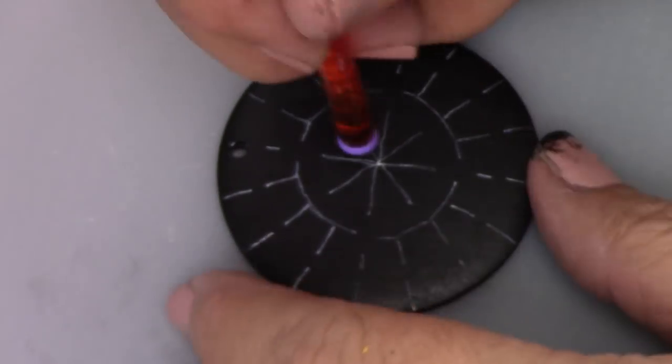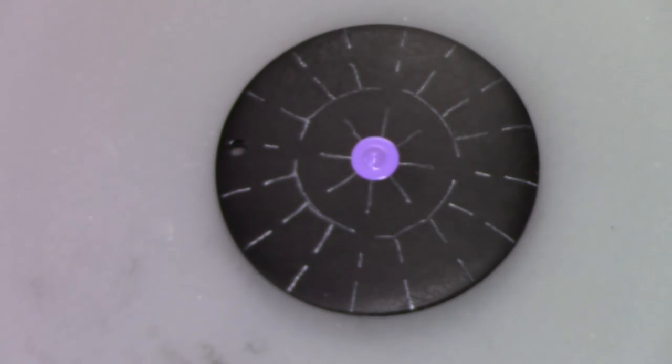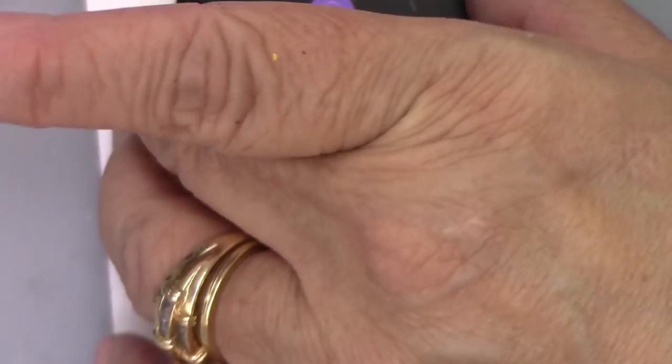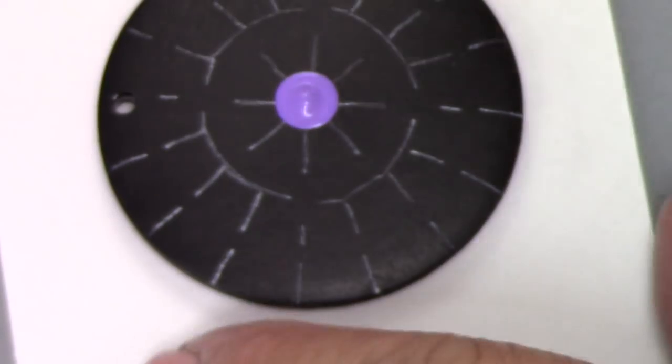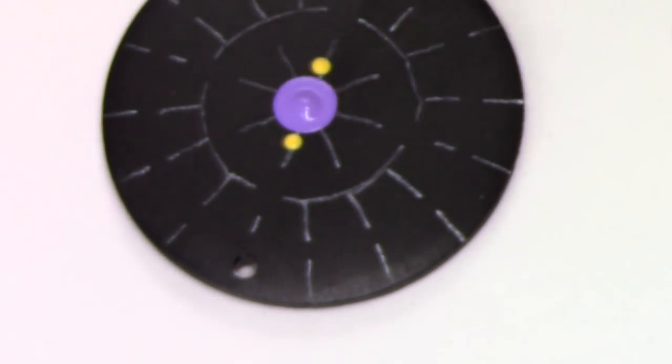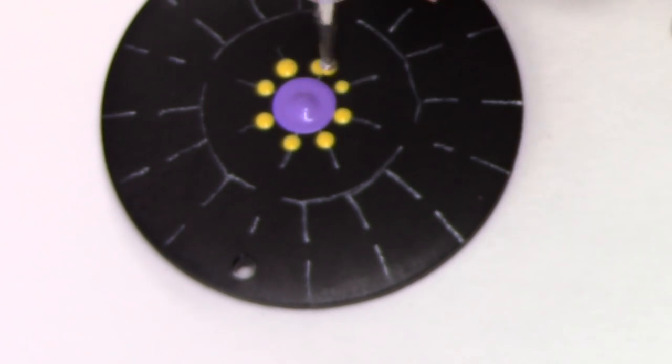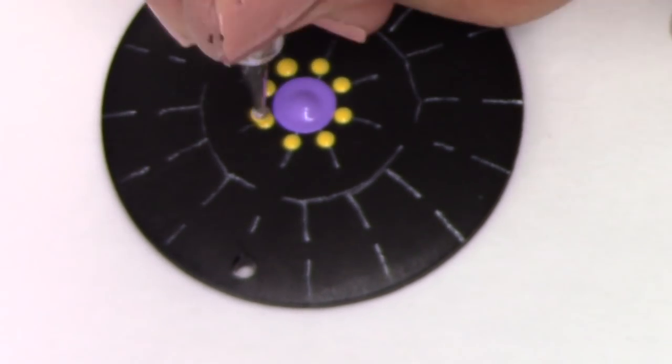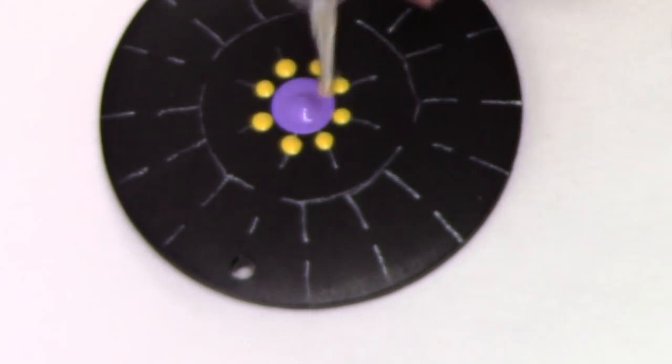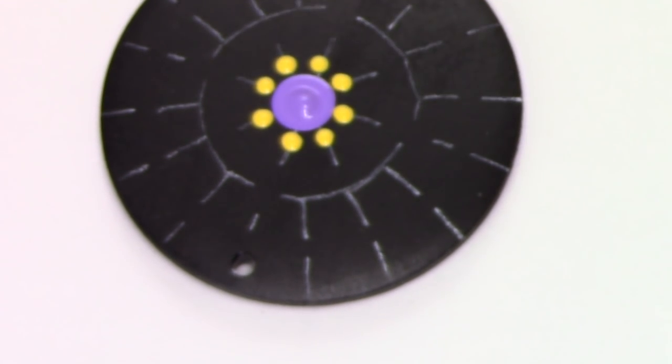I'm just using two colors in this particular pattern, a purple and a yellow. I really love the way purple and yellow look together. I just think it's so fresh and spring. I've also placed my pendant blank on a piece of cardstock with some tape behind it just to give me something to hold on to because the surface of the pendant is so small.